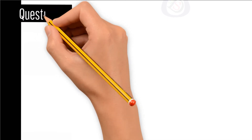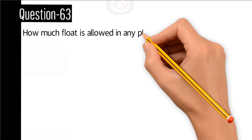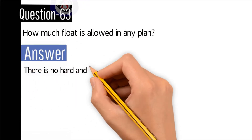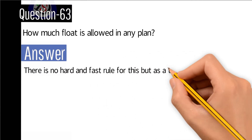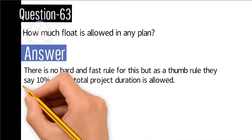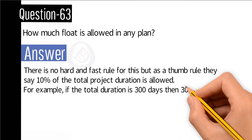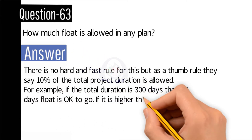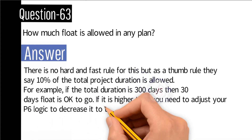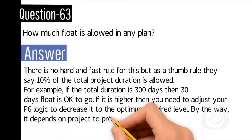Question number 63: How much float is allowable in any plan? Answer: There is no hard and fast rule, but as a thumb rule, 10% of the total project duration is considered allowable. For example, if the total duration is 300 days, then 30 days of float is acceptable. If it is higher, you need to adjust your P6 logic to bring it to the optimum level. It depends on the project.